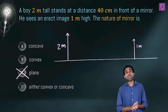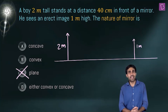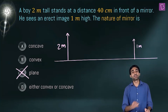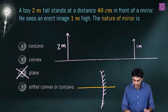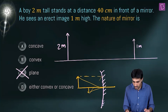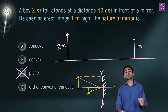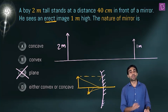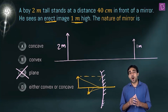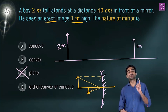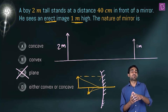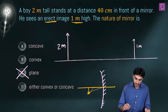Can a concave mirror form smaller images? Yes, concave mirrors can form smaller images, but those would be real images — and real images formed by a concave mirror are inverted. In our case we have an erect image, so we need to consider virtual images from a concave mirror. Concave mirrors can form virtual and erect images, but those are always magnified.